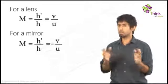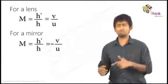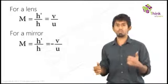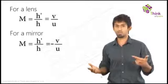So if you really understand what we are trying to do, you don't really have to remember it's V by U for lens minus V, none of that. Magnification is positive when the image is erect. Magnification is negative when the image is inverted. That's all you have to know.